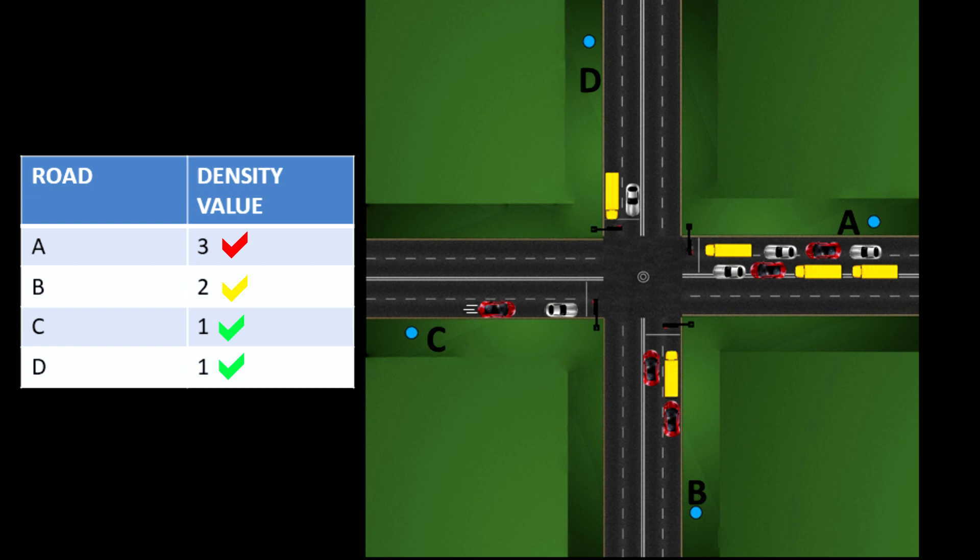Here in the gateway, these density values are compared and the highest value path is made to glow the green signal for a longer time, say 60 seconds. And path B having the next highest value is made to signal green for a comparatively lesser duration than A, say 45 seconds.